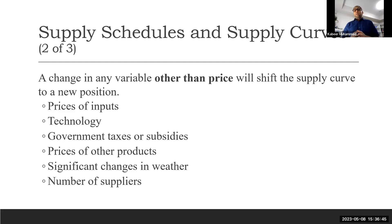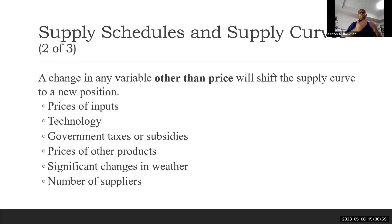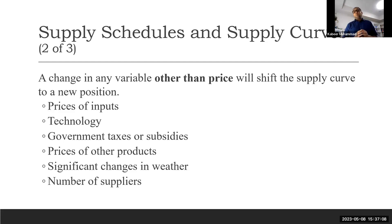Input prices — what we need to use as raw material or input to produce. One of the most important inputs for any good we produce is labor. If the labor cost increases, we will supply less. If the labor cost goes down, we will supply more. Electricity and all these things we use to produce something are called input prices. So if input prices decrease, supply increases, because the profit margin is increasing.